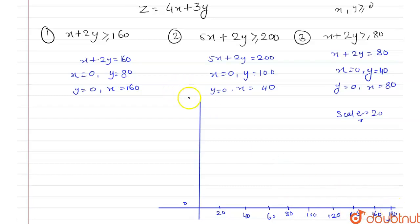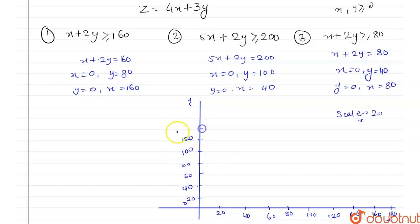On the y-axis, the points are 20, 40, 60, 80, 100, 120, 140, 160, and 180.